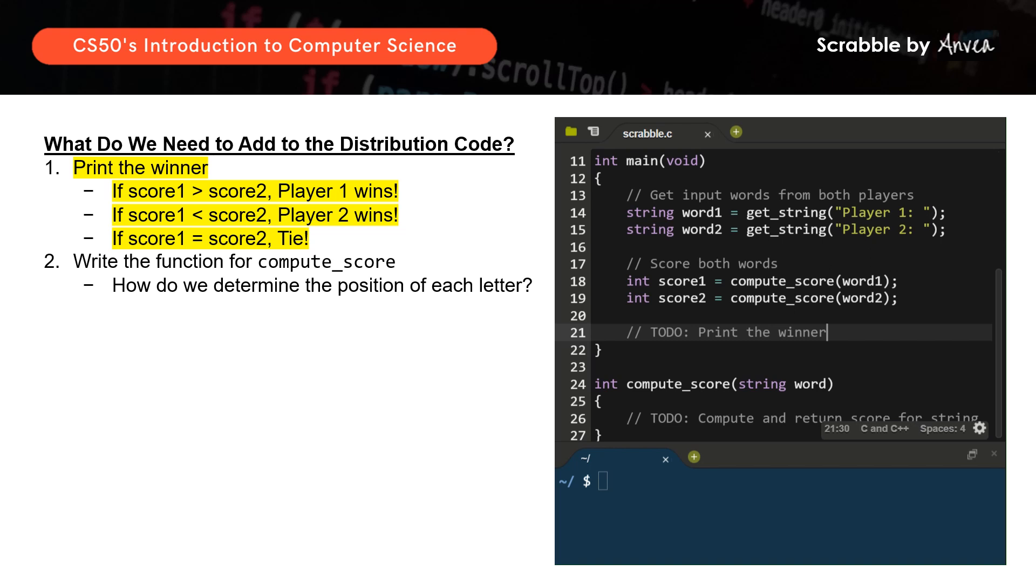So we can start first. If the first scenario, score 1 is greater than score 2, we want to print a string that says player 1 wins, right? And then next scenario, else if score 1 is less than score 2, it will print another string that says player 2 wins, right?